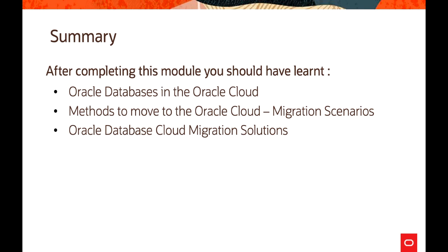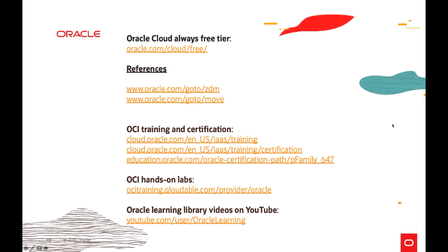To summarize, we looked at various Oracle database offerings available in Oracle Cloud, discussed methods to move to Oracle Cloud, and covered different migration scenarios including bare metal, VMs, Exadata Cloud Service, and autonomous databases. We also discussed several migration solutions like MV2, ADB, and the Zero Downtime Migration tool. For more information, refer to the links on the web. You can enroll in training and certification programs, explore the OCI training hands-on lab platform, and subscribe to the Oracle Learning YouTube channel for the latest videos. Thanks for watching — hope it was useful.